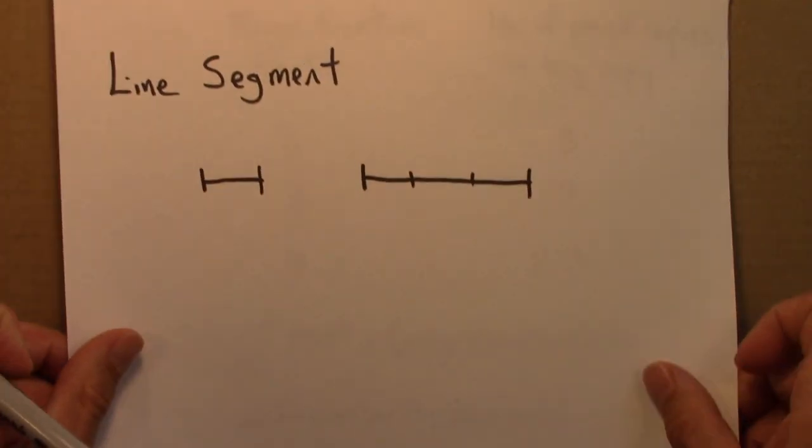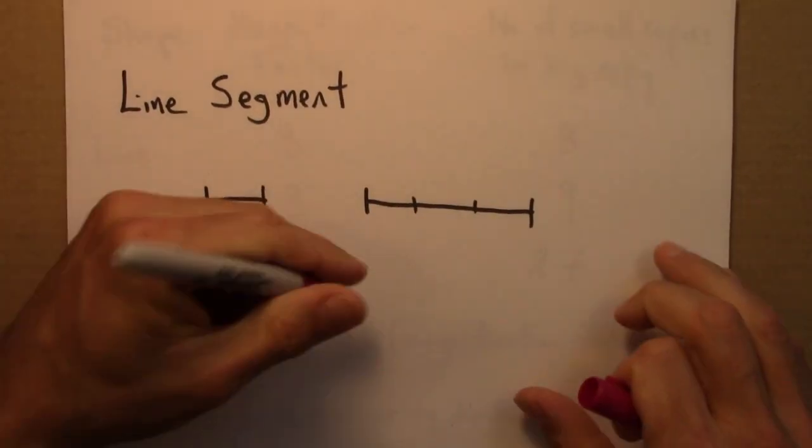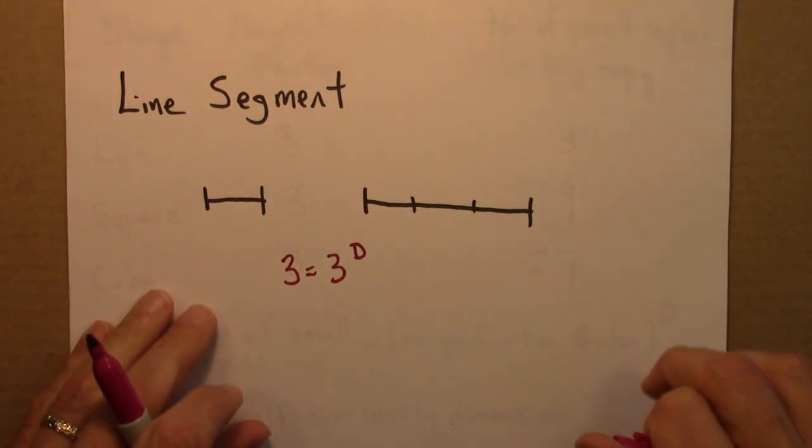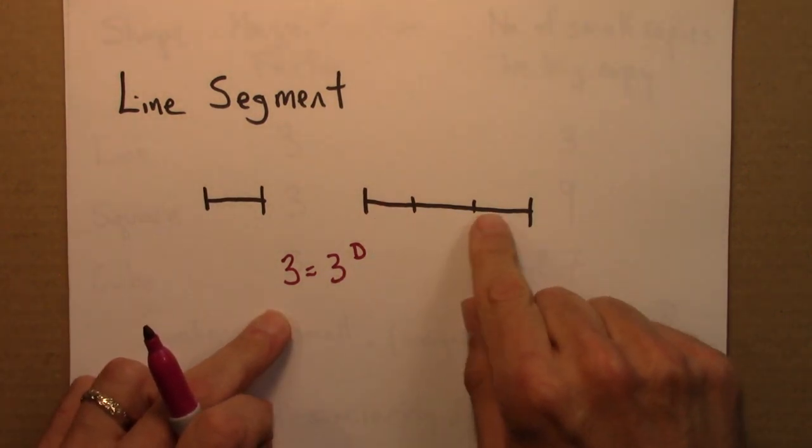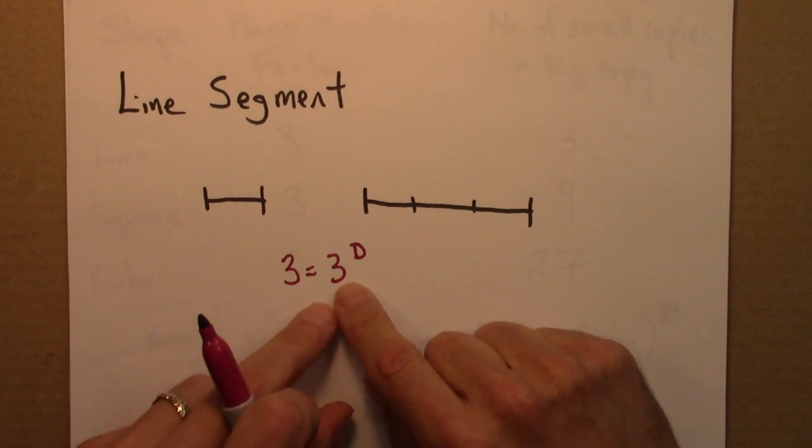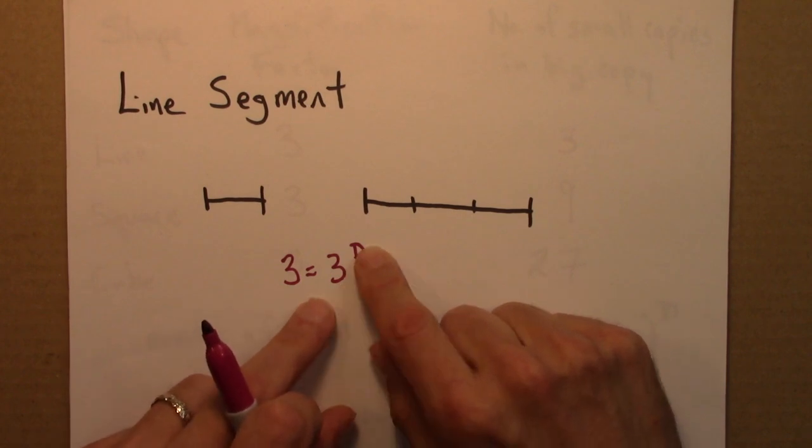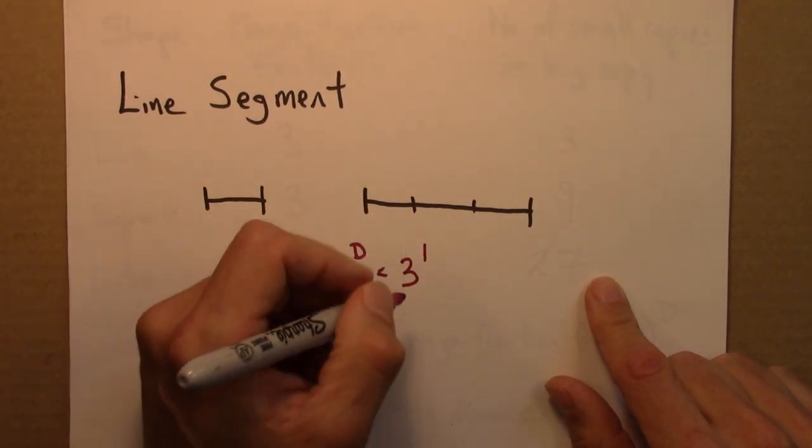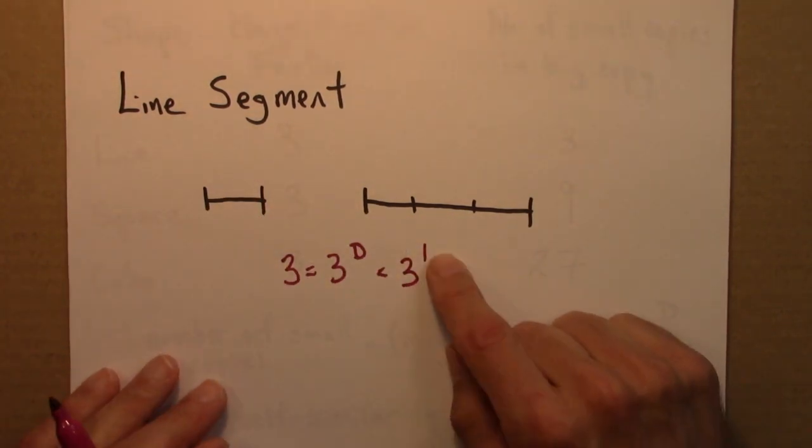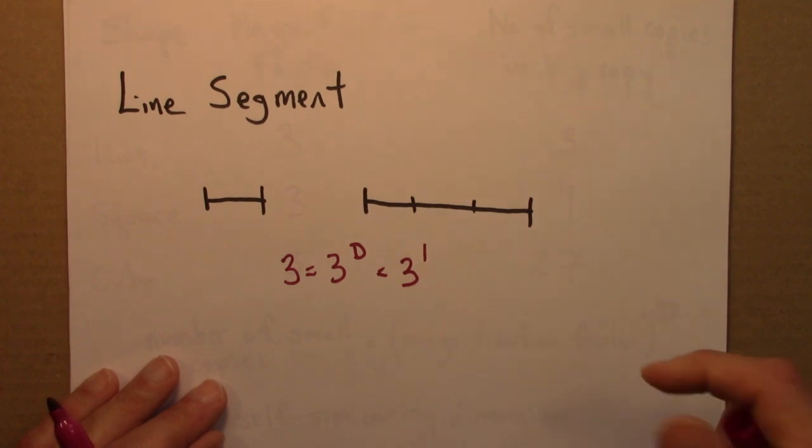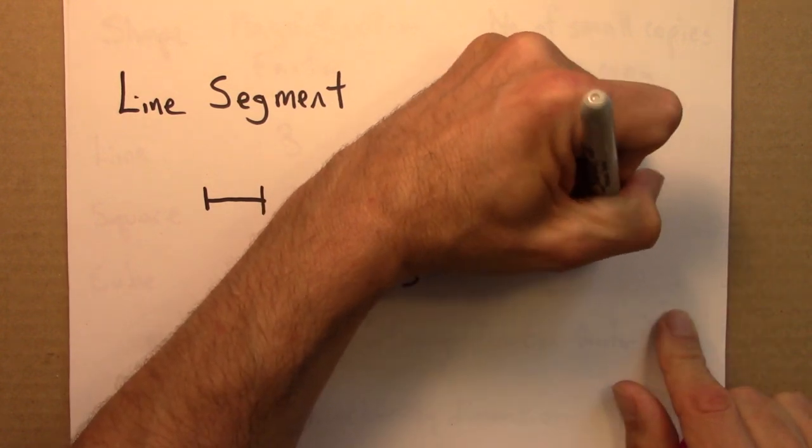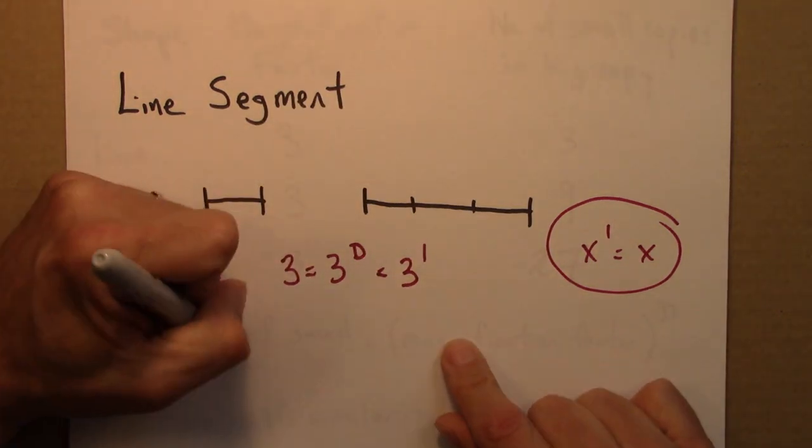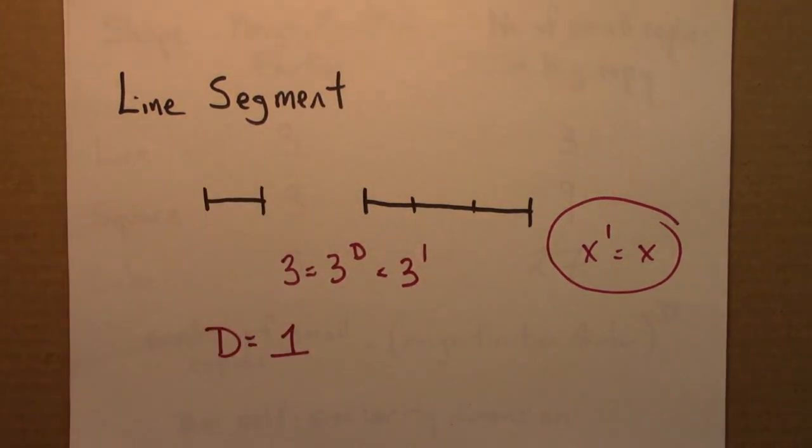And we can do the same thing with a line. This equation is a little bit boring. Number of small copies in the line segment is 3. And the magnification factor is 3. So what's the exponent? Well, 3 to the 1. Remember that a number raised to the first power is just that number. So x to the 1 is just x for instance. So this says that the dimension of a line is 1.